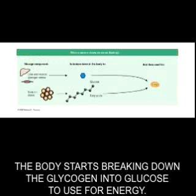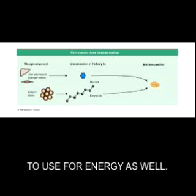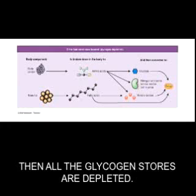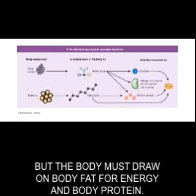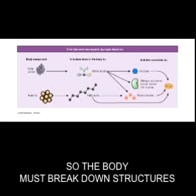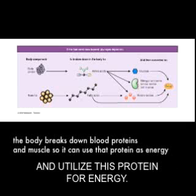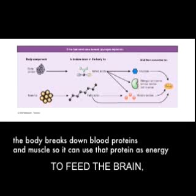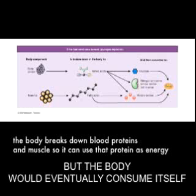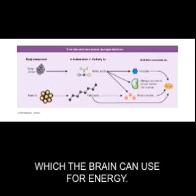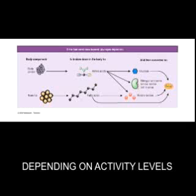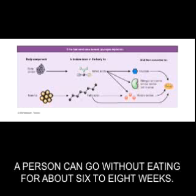When a person fasts or doesn't eat, the body starts breaking down glycogen into glucose for energy, and fat stores are mobilized as well. If fasting continues beyond a day, glycogen stores are depleted — this timeframe varies by person and activity level. The body must then draw on body fat and body protein for energy. Since we don't store protein, the body breaks down structures like blood proteins and muscle. To prevent the body from consuming itself, fatty acids are converted into ketone bodies, which the brain can use for energy. This process takes about 10 days, and depending on activity levels and body fat, a person can go without eating for about 6 to 8 weeks.